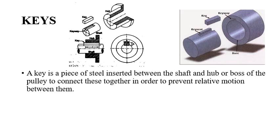A key is a piece of steel inserted between the shaft and hub or boss of the pulley to connect these together in order to prevent relative motion between them. This is very important to prevent the relative motion in order to connect the shaft to a flange or hub or a pulley or gear. We need a mechanical member which will transfer the motion from the driving shaft to the hub or a gear or pulley.